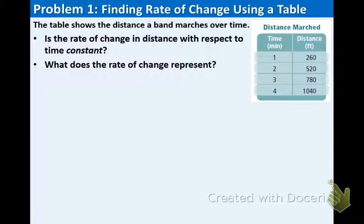In Example 1, we have a table that shows the distance a band marches over time. Take a moment to look at the table at right. As you can see, the first column shows time in minutes: 1, 2, 3, 4. The right column shows distance in feet: 260, 520, 780, and 1040.